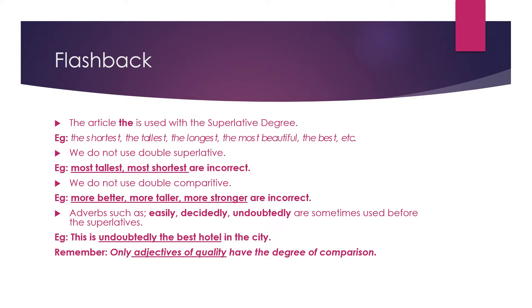We do not use double superlative. For example, 'most tallest' or 'most shortest' are incorrect. We do not use double comparative either. For example, 'more better,' 'more taller,' 'more stronger' are incorrect. Adverbs such as easily, decidedly, and undoubtedly are sometimes used before the superlative. For example, 'This is undoubtedly the best hotel in the city.' Remember, only adjectives of quality have the degree of comparison.